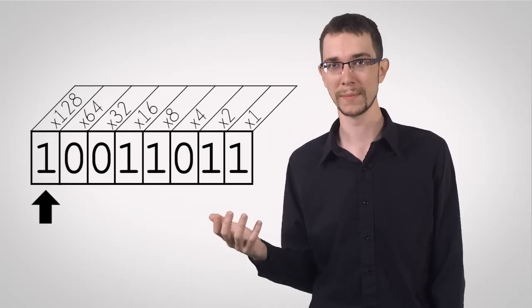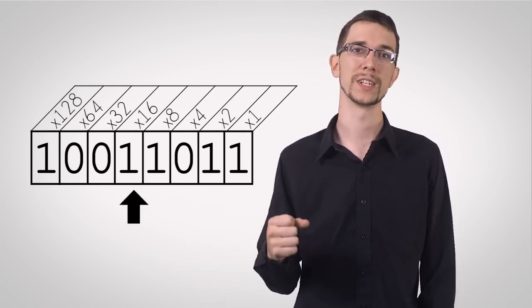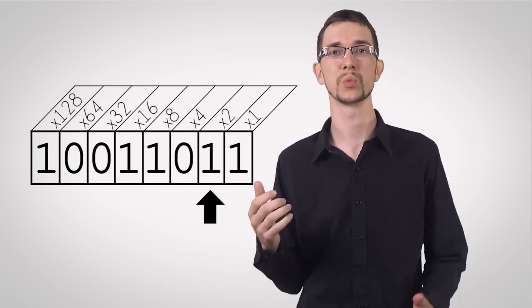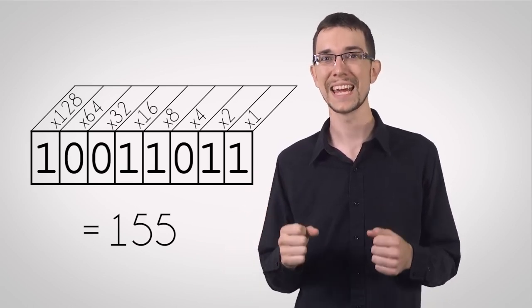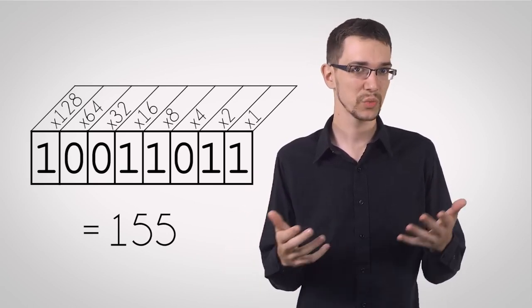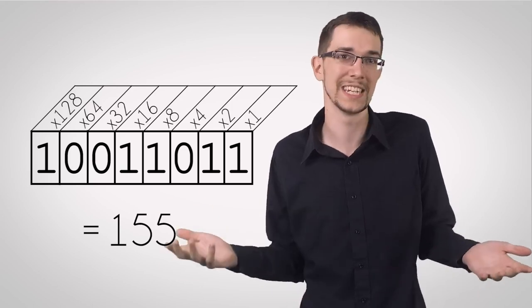So a sequence like this would equal 1 times 128, plus 1 times 16, plus 1 times 8, plus 1 times 2, plus 1, which is 155. And that's how you count in binary. It's actually really simple. It's just multiplication and addition.